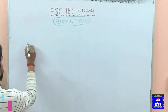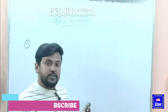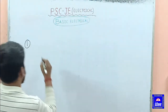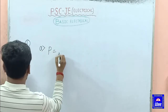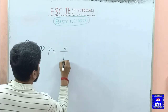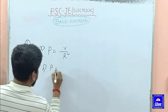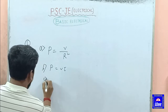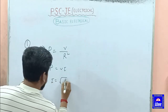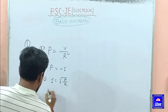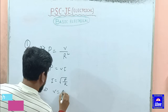Question number 1. Which of the following relations is not correct? Option 1, Option B, Option B equal to 1.